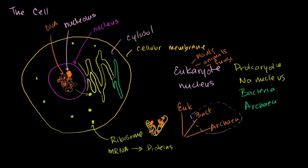The endoplasmic reticulum is a big stack of folded membranes. Some ribosomes are actually attached to parts of it. Some are free, some are attached. This big flap of convoluted membrane is the endoplasmic reticulum—endoplasmic reticulum, it's fun to say, maybe a good name for a band.